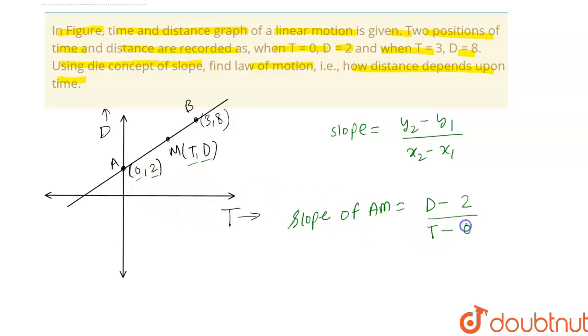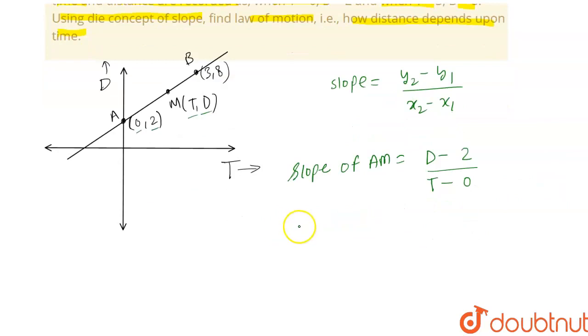Now find the slope of BM. The slope of BM is given by: y₂ is 8 minus y₁ is d, divided by x₂ is 3 minus x₁ is t.